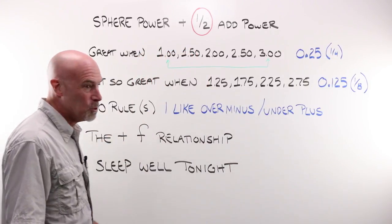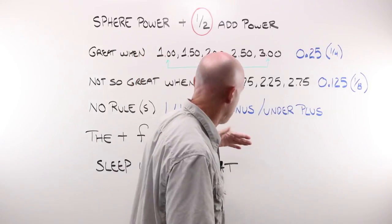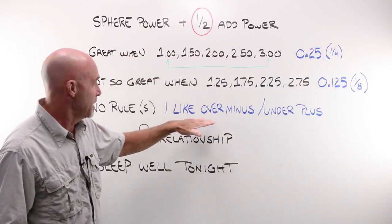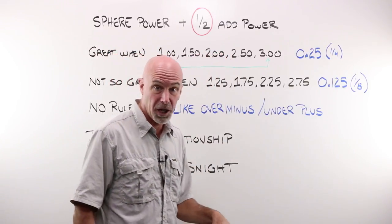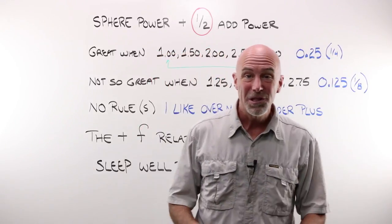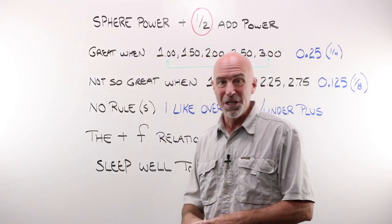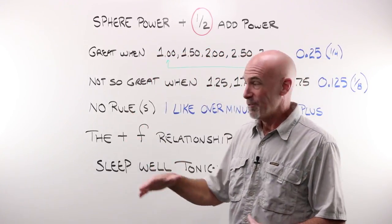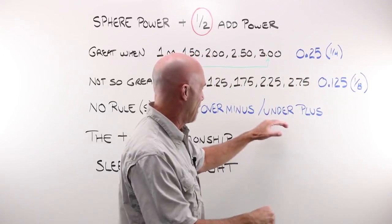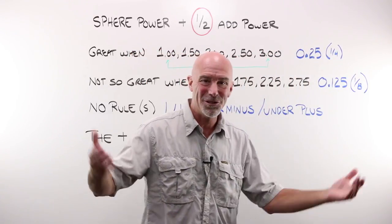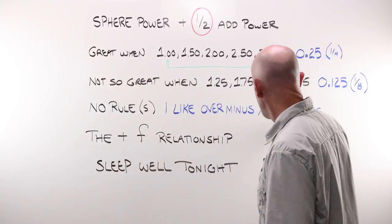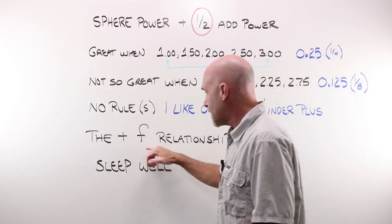There are no rules to doing that. Myself, we were taught and I like to over minus and under plus. I am sure that if you toss this as a poll on social media that half of the opticians would feel very strongly in the opposite way and the other half would say that this is correct, such is the world today. I like this and there's a reason I like that.